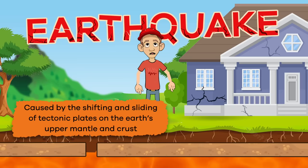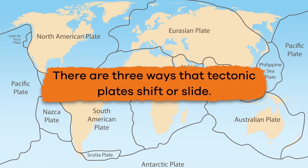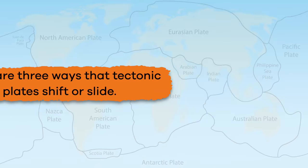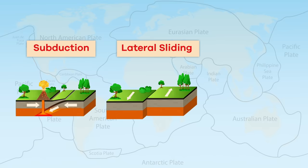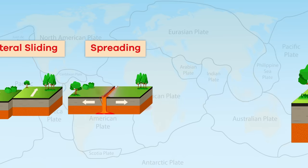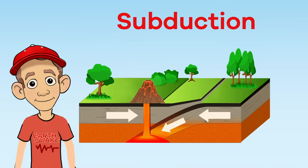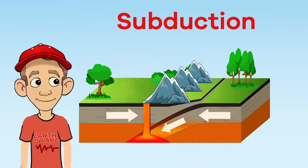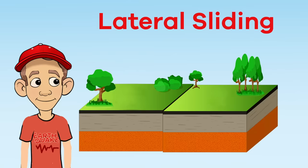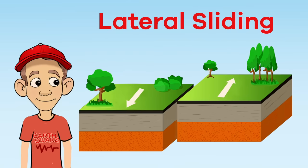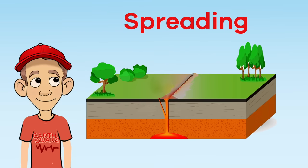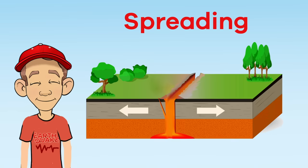When the faults get stuck, they build up pressure, and when they get unstuck, you guessed it — an earthquake. So basically, an earthquake is caused by the shifting and sliding of tectonic plates on the earth's upper mantle and crust. There are three ways that tectonic plates shift or slide: subduction, lateral sliding, and spreading. Subduction happens when plates crash into each other — this can cause one plate to slide under another and be destroyed, or the edges of the plate may raise up and form mountains. Lateral sliding means that the plates slide alongside each other, which can create lots of friction.